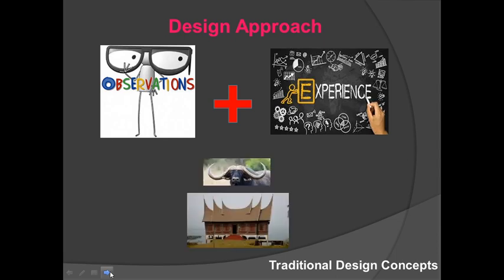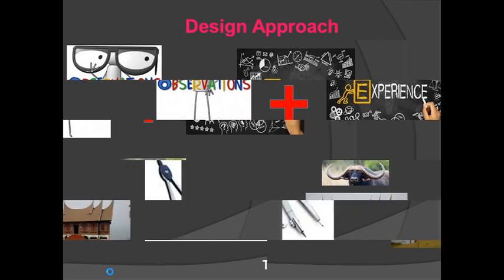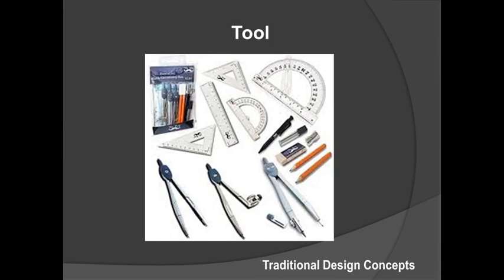For example, the Minangkabau people created the Minangkabau roof design based on observation of buffalo horns. Another characteristic of traditional design concept in terms of tools: designers using the traditional design concept use ordinary tools such as pencil, ruler, T-square, and they sketch the design on a piece of paper.